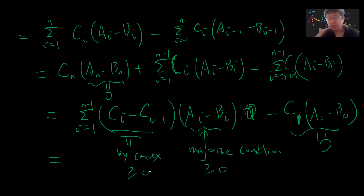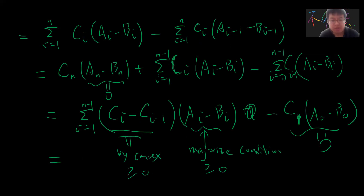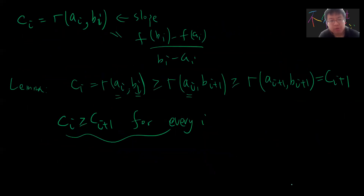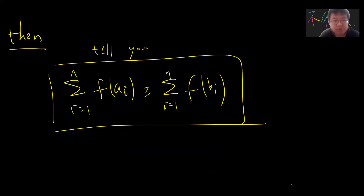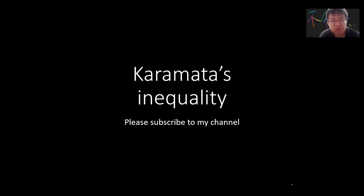So the proof is complete. If you reverse the convex condition to concave, the inequality reverses. That's my short video about Karamata's inequality — hope you guys like the proof, and see you in the next interesting inequality video.